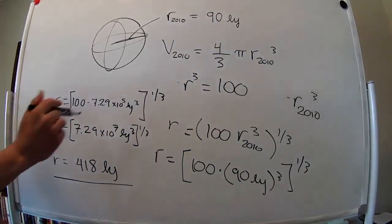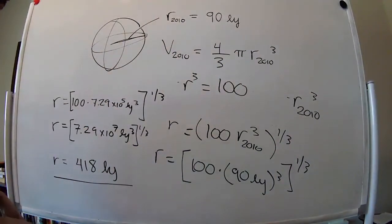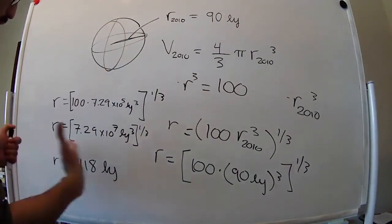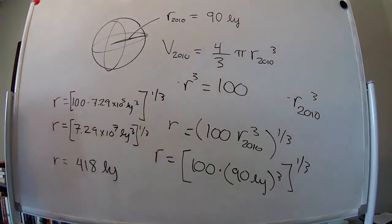So that is the radius of a sphere that is 100 times bigger in volume than the current volume that the radio signals have expanded into space.